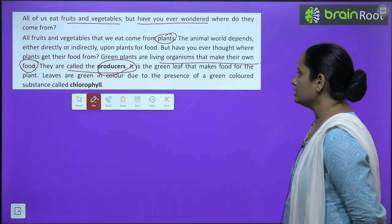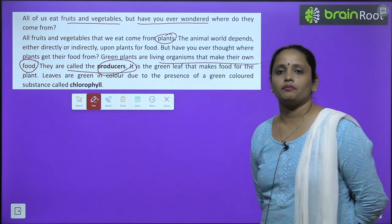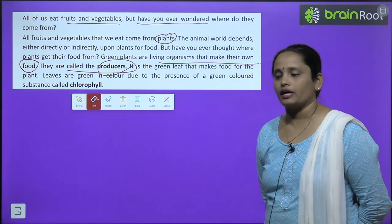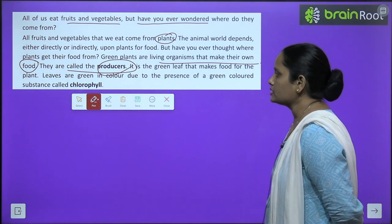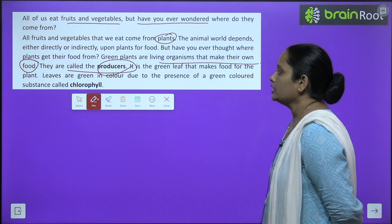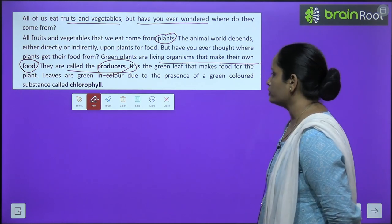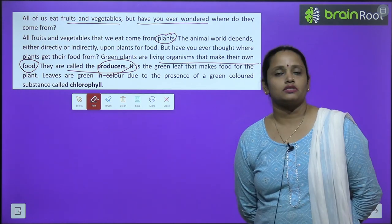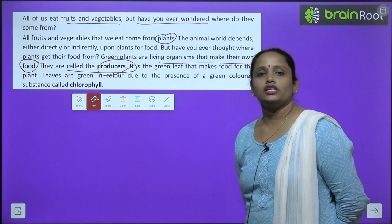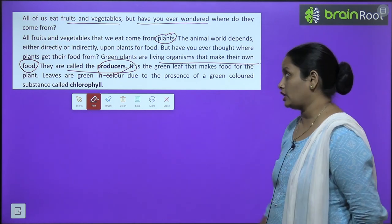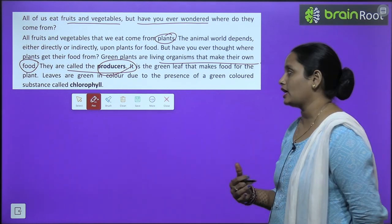It is the green leaf that makes food for plants. Leaves are green in color due to the presence of a green color substance called chlorophyll. So leaves are green in color due to the presence of chlorophyll.